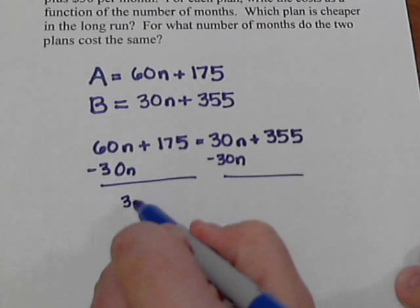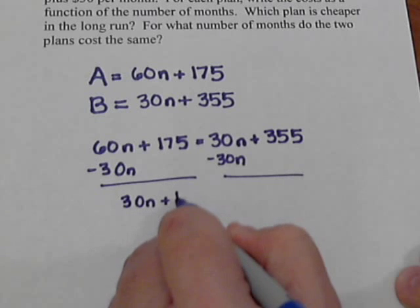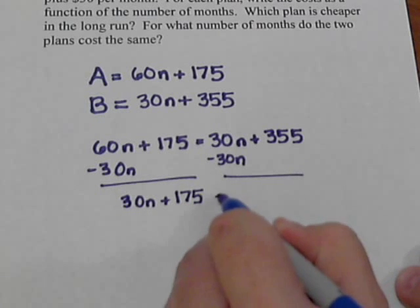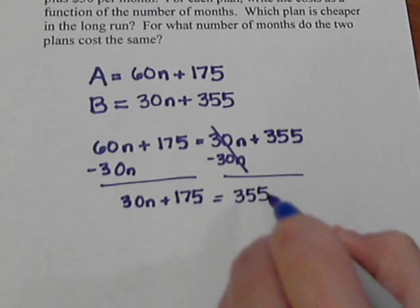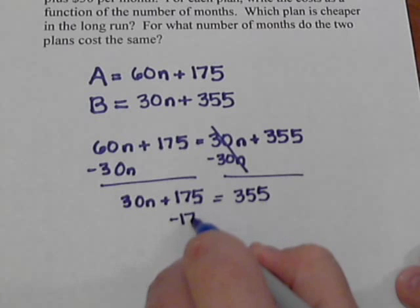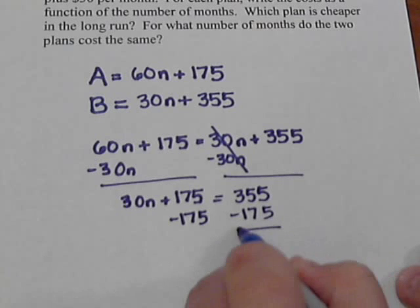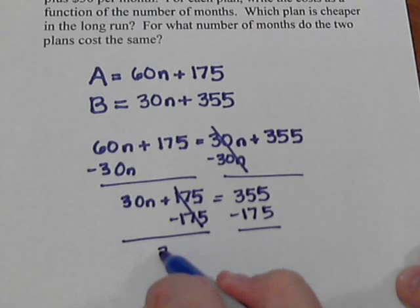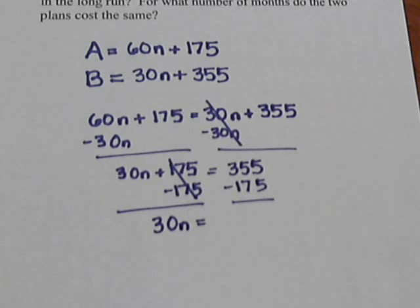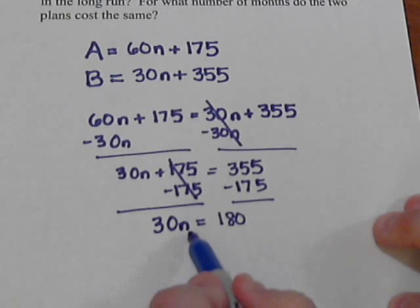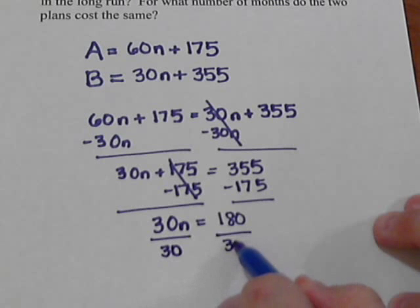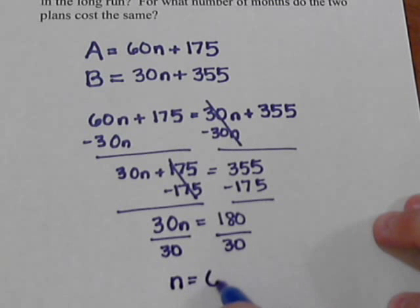Okay, that leaves me with 30n + 175, and over here the 30n's cancel and we're left with 355. Now we're going to subtract the 175, so that leaves us with just the 30n here, and then 355 minus 175 is 180.